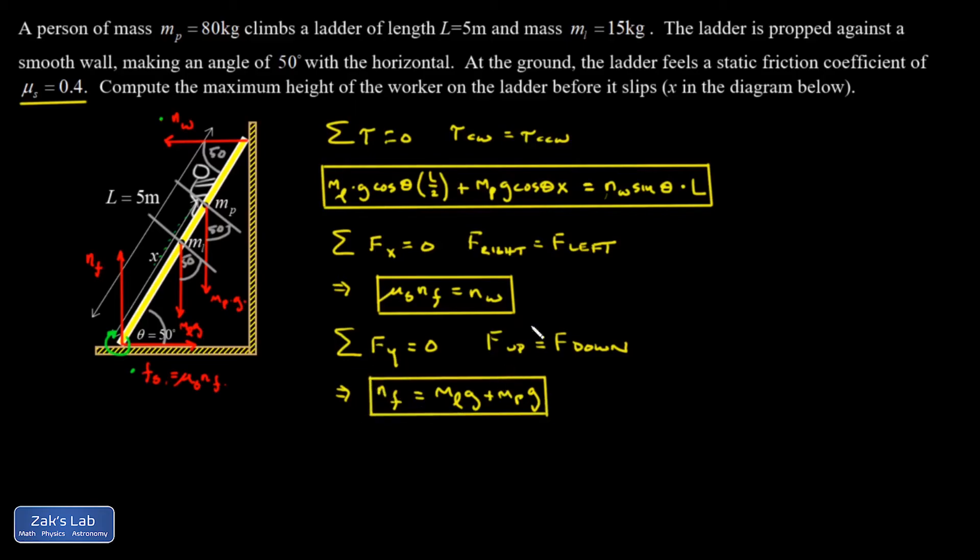So this last equation allows me to actually write down a number for the normal force exerted at the floor if I wanted to. But I'm still going to keep it symbolic for a second. So I plug that NF into my second equation, and I find out the normal force exerted by the wall is going to be mu s times NF.